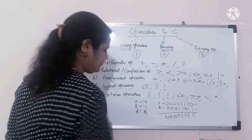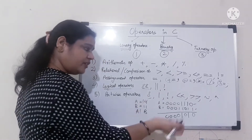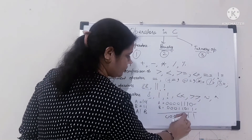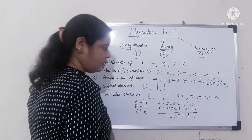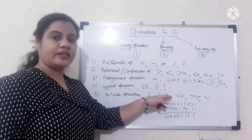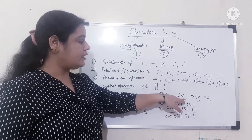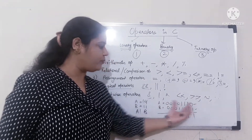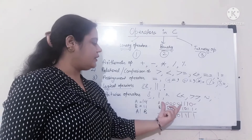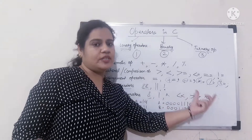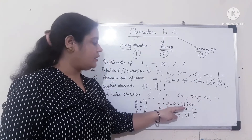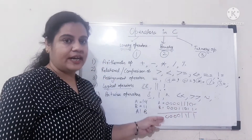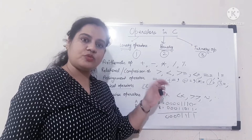For bitwise OR, if either one bit is true, the result is also true. For shift operators — left shift and right shift — they shift the bits of the left-side expression by the specified number of positions to the left or right, filling empty spaces with 0.